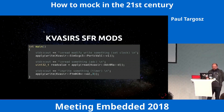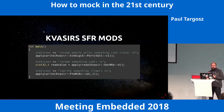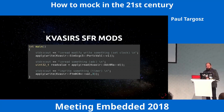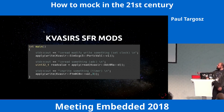In Kvasir you can combine modifications of special function registers. You can read them, write them, or read-modify-write. I have all three examples here, and that's what it looks like in the main code for the MCU.